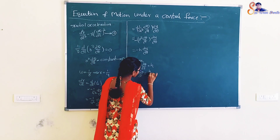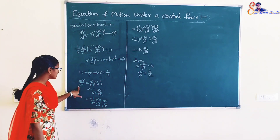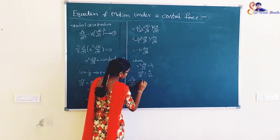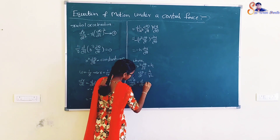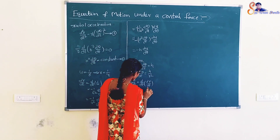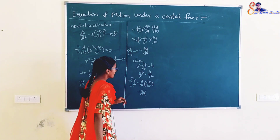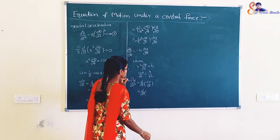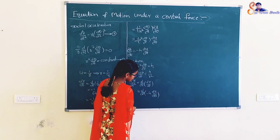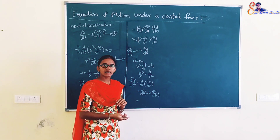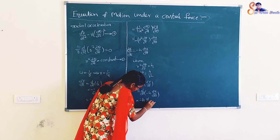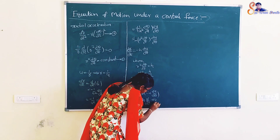Again differentiating, d²r/dt² = d/dt(dr/dt). Substituting the value of dr/dt = −h(dU/dθ), we get d²r/dt² = d/dt(−h · dU/dθ), which becomes −h · d(dU/dθ)/dt.